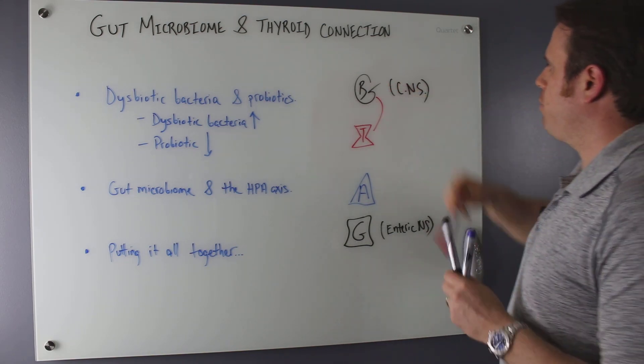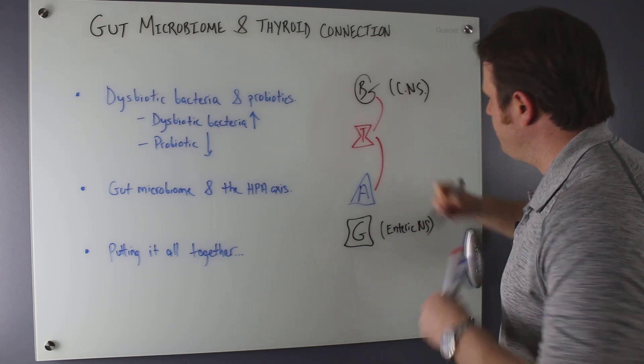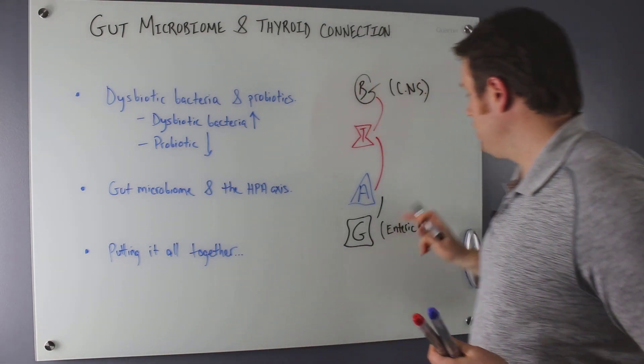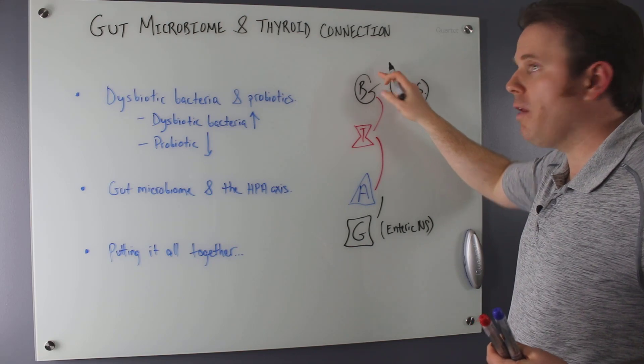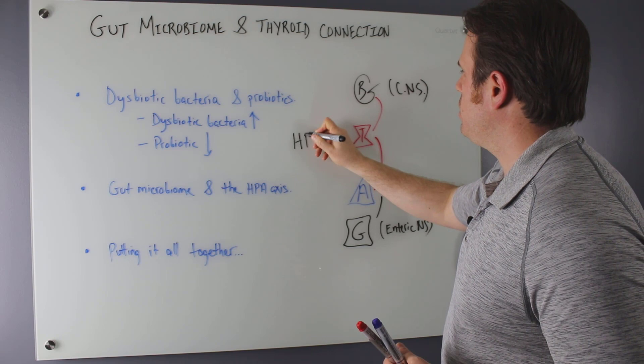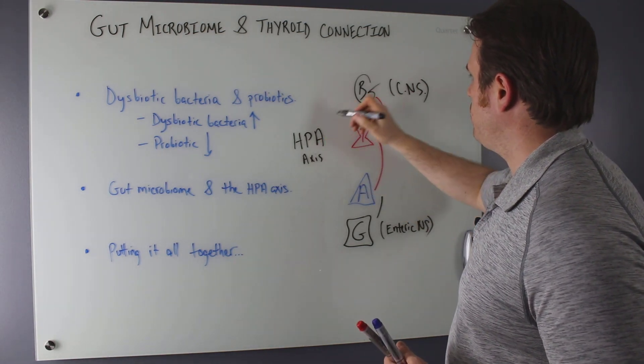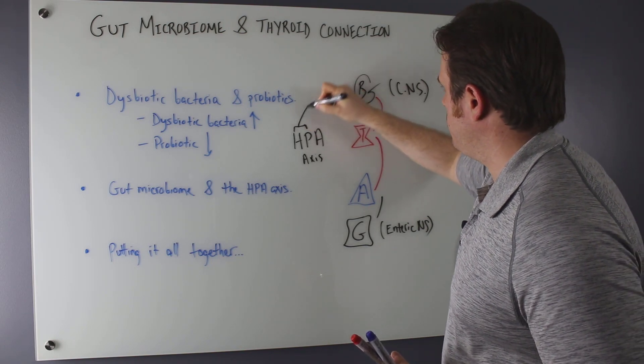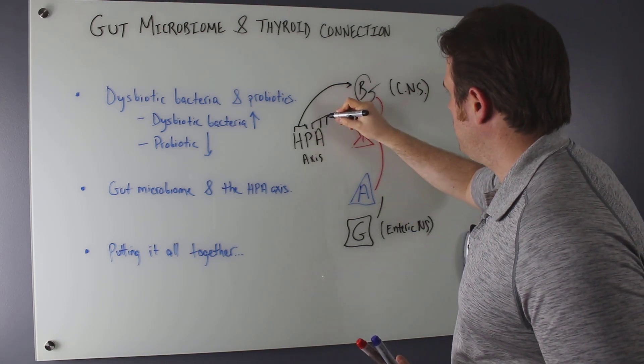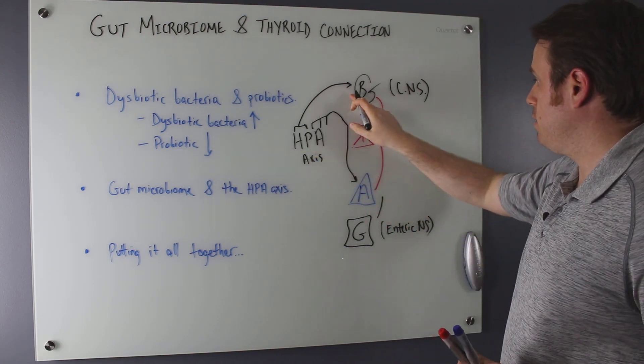So these different feedback loops going from the brain to the thyroid, the thyroid to the adrenals, and then the adrenals to the gut can get dysregulated with dysbiotic bacteria as a major, major role on the HPA axis. So this is really important, HPA axis. And that's essentially the brain, HP is the brain, hypothalamus pituitary. And then the A part is going to be the adrenals.